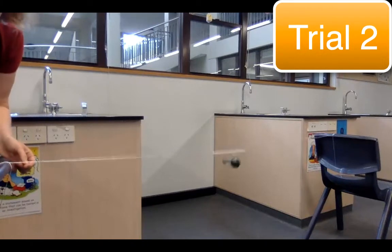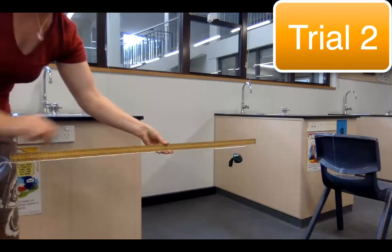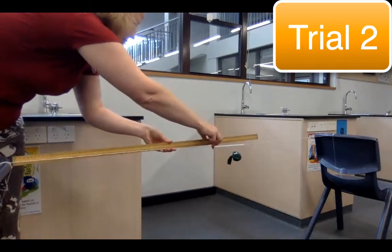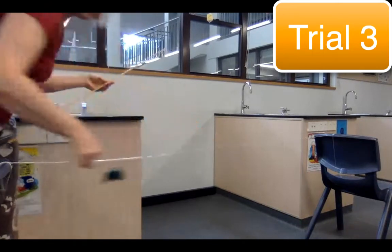So for our second trial it hasn't gone quite as far but we will measure it. Measure it to the same point on the straw. Record that result in your results table and then repeat for a third trial.